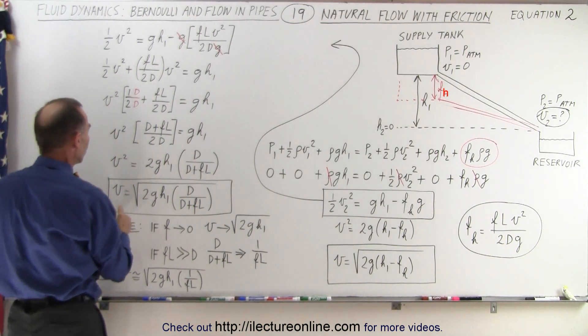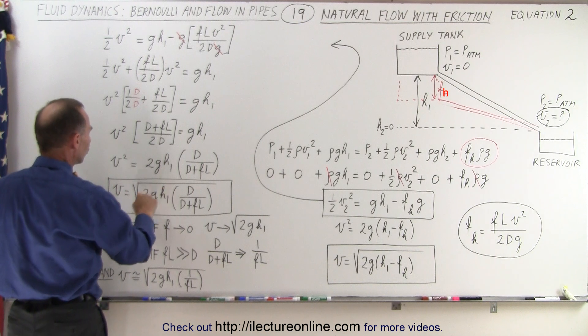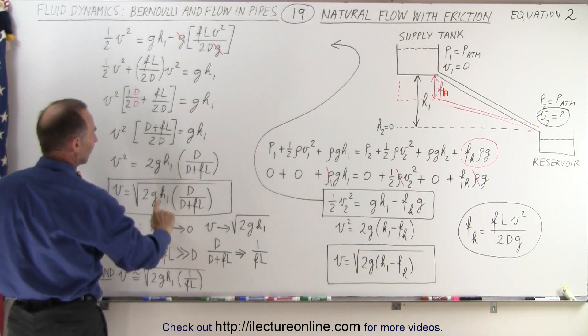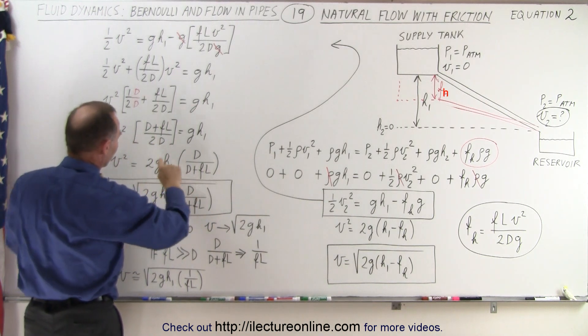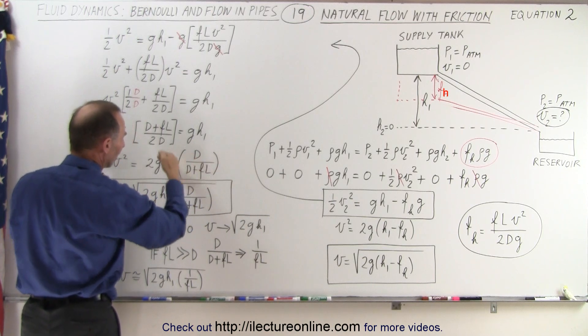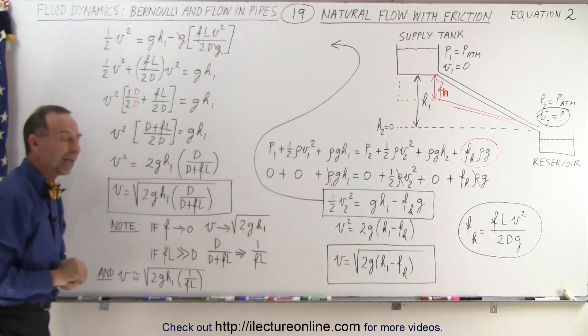So then if we take the square root of both sides we get the square root of 2gh but now we also have the term d divided by d plus fl which ends up in reverse of course because the d goes to the numerator and the d plus fl goes to the denominator. So we end up with this, take the square root of both sides, we have that.